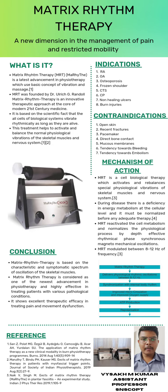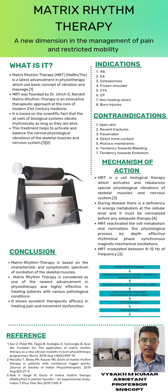Mechanism of Action of Matrix Rhythm Therapy: Matrix Rhythm Therapy is a cell biological therapy which activates and rebalances special physiological vibrations of skeletal muscles and the nervous system. During disease, there is a deficiency in energy metabolism at the cellular level, and it must be normalized before any adequate therapy. Matrix Rhythm Therapy reactivates the cell metabolism and normalizes the physiological process by depth rhythmical phase synchronous magnetomechanical oscillations.